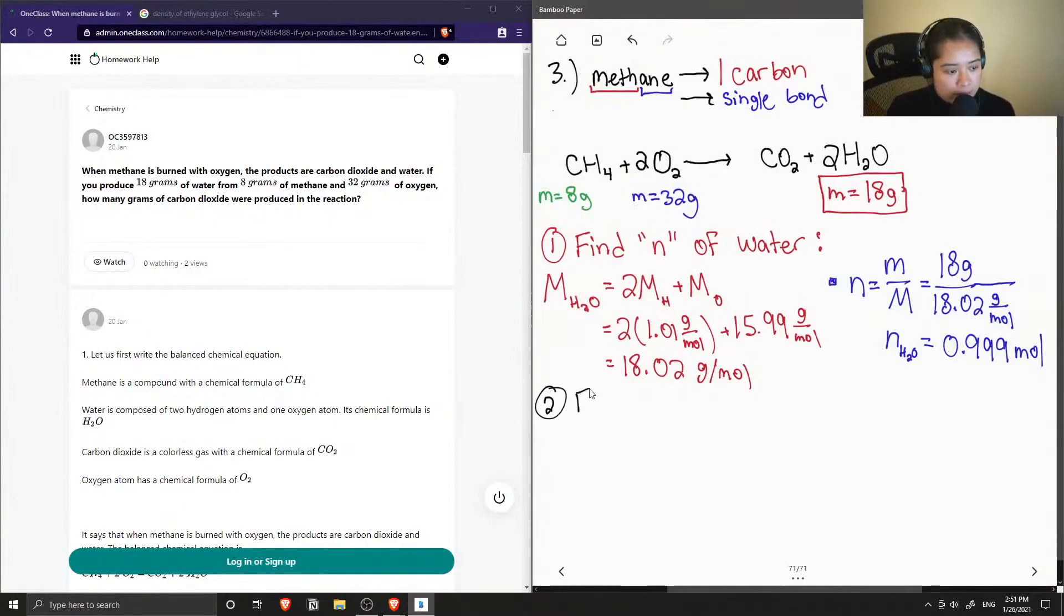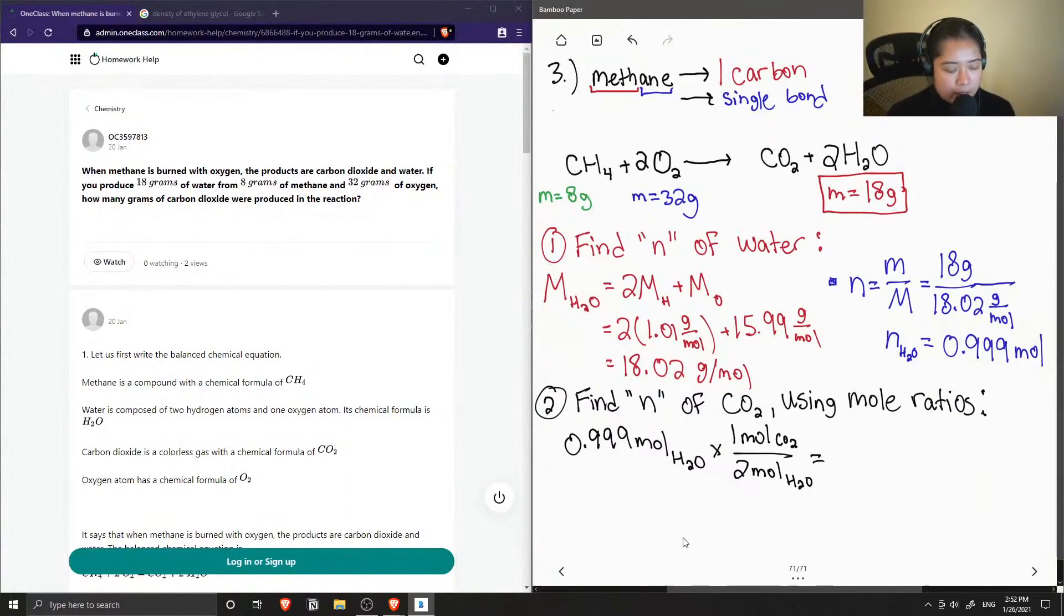So step two is to now find the number of moles of carbon dioxide using mole ratios. So we know that the number of moles of water that was formed in this reaction was 0.999. And if we multiply this by the ratio where one mole of carbon dioxide is formed and two moles of water is formed in this reaction as well, then we just need to divide our number of moles of water by two. And we know we did it correctly if our units for the moles of water cancel out and we're left with moles of CO2, and you get 0.499 moles of CO2.